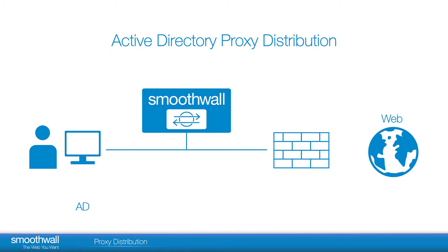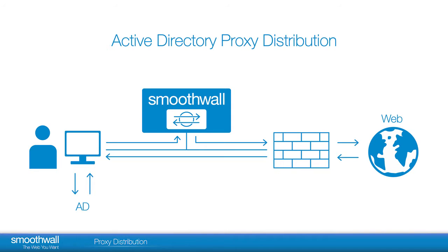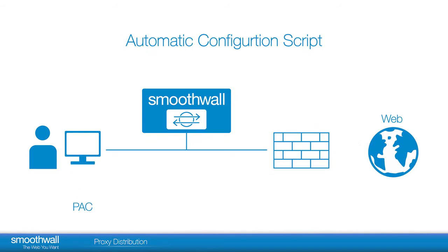In a Windows 2000 Plus domain using Microsoft Windows Active Directory, proxy settings can be configured in the Domain Security Policy. This eliminates the need to manually configure any part of the user's system. An administrator configures the browser to use the SmoothWall as a proxy in Group Policy. Normal browsing continues through the SmoothWall with the provided settings.